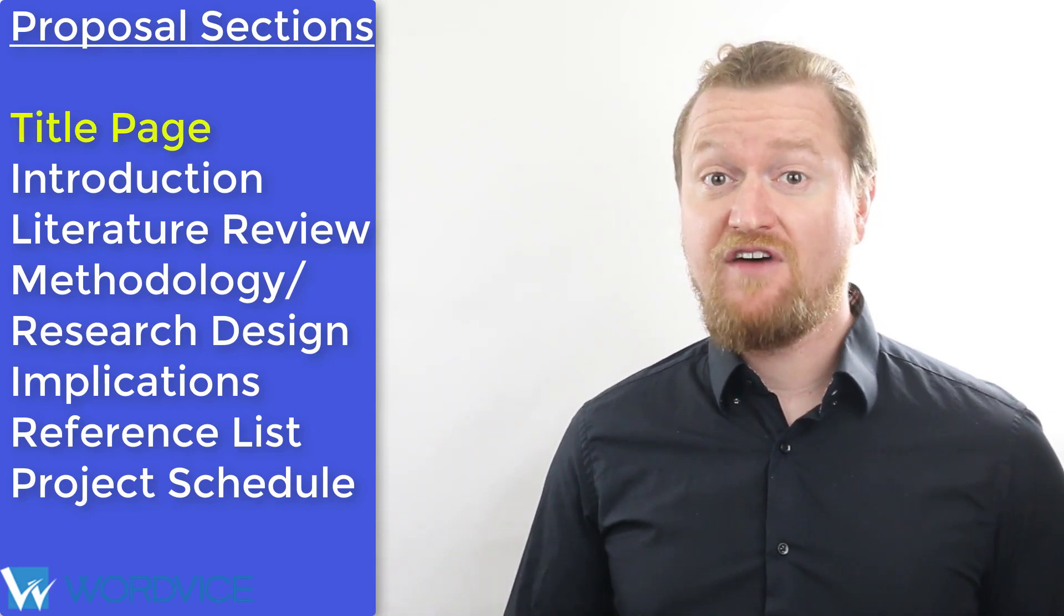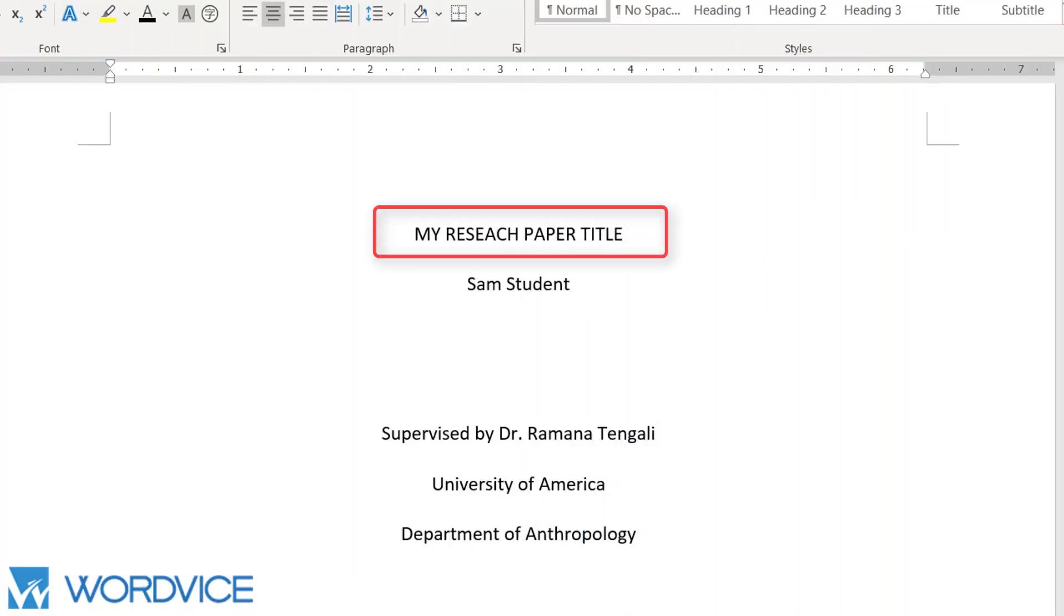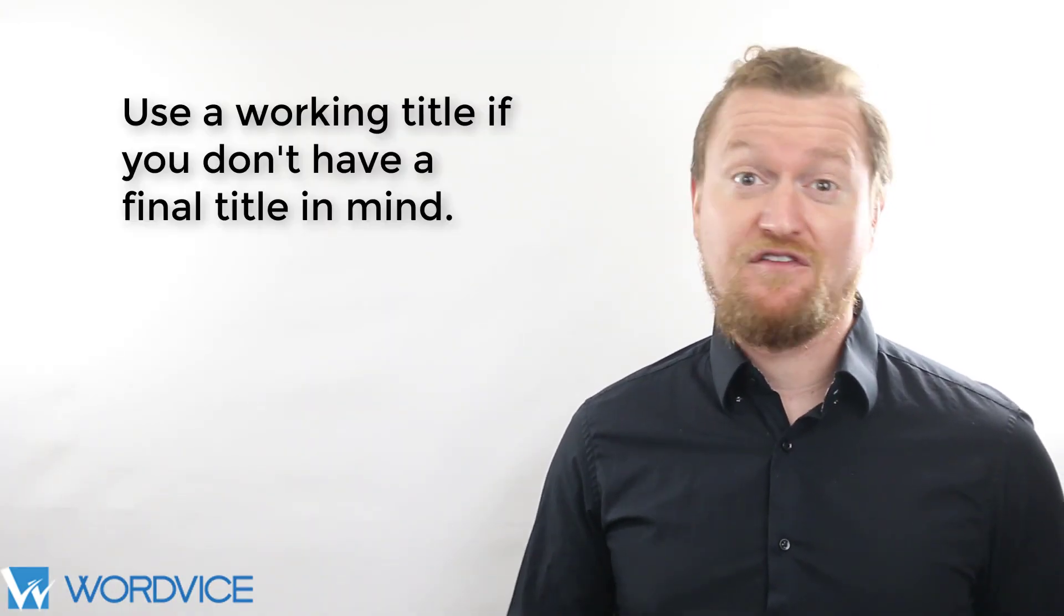The title page should include the main identifying components of the paper. Include the proposed title of your project, your name, the name of your supervisor or supervisors, your institution, and department. You can choose a working title at this point if you have not decided on a final title.